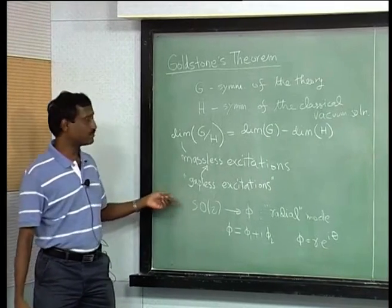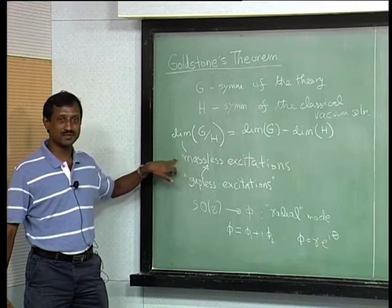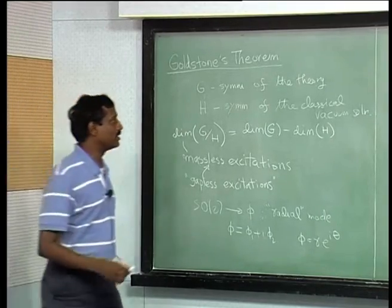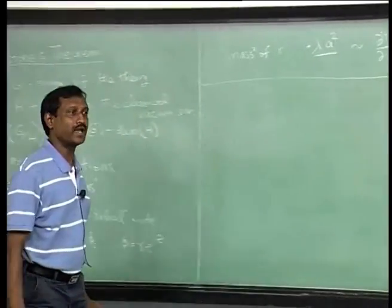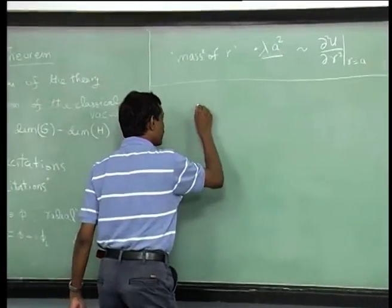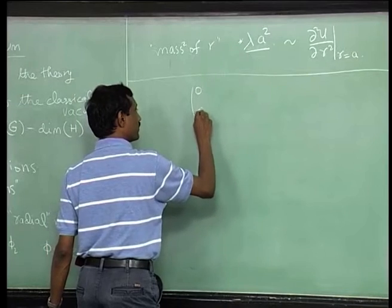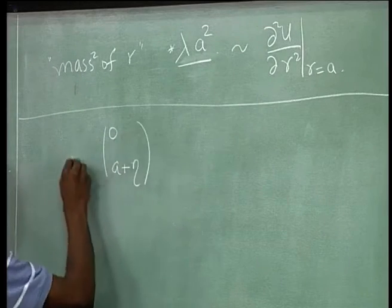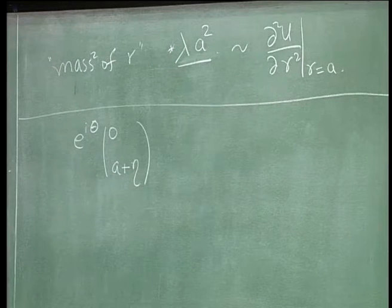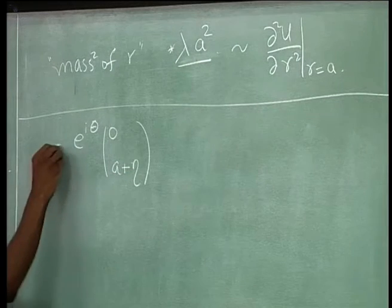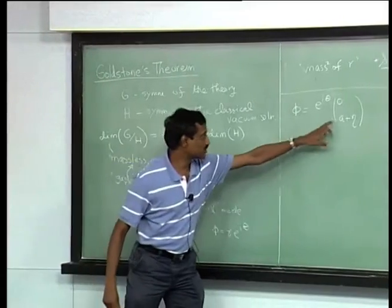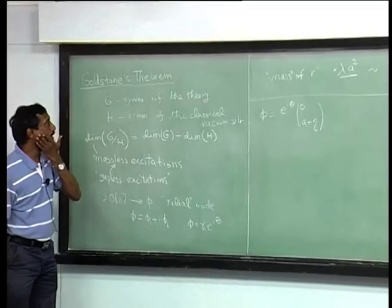The terminology difference between fields: particle physics people say massless excitation, condensed matter people say gapless — they are really the same thing. There was a question at the end of last lecture about whether there is a clever way of parameterizing the fields. I wrote something like (0, a) and then wrote φ = (a + η)·e^(iθ), where η and θ are the excitations.